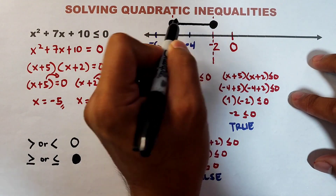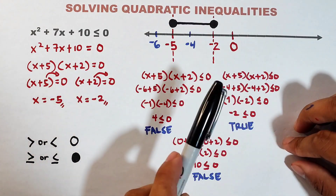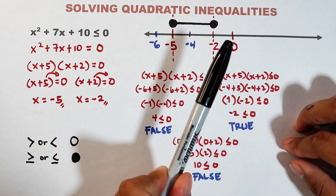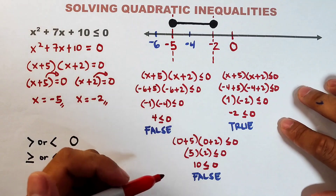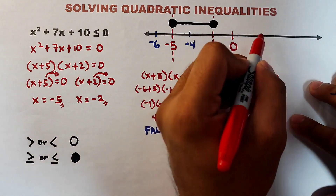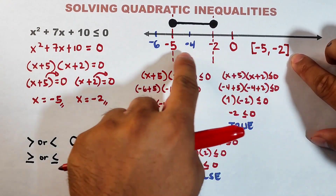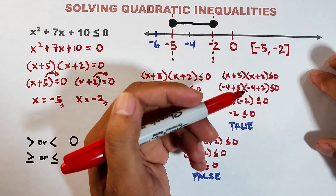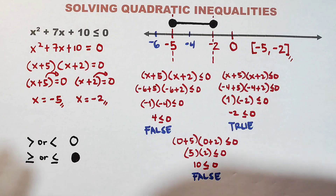Our solution is simply the middle region. Since -5 and -2 are included, all numbers greater than -5 but less than -2 are solutions. In interval notation, we write this as [-5, -2], using square brackets because the critical values are included. If the critical values were not included, we would use parentheses.